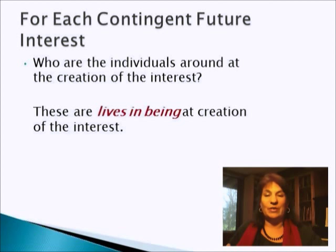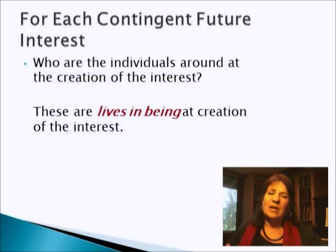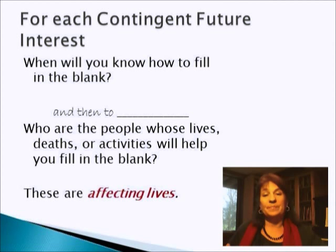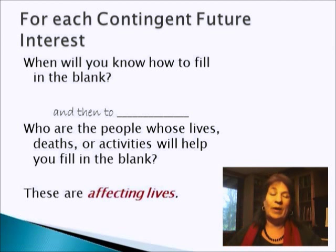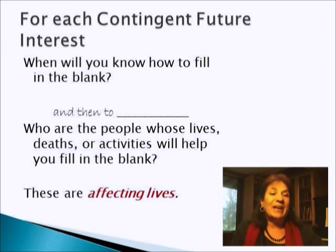So for each contingent future interest, here's how we go about it. Who are the individuals around at the creation of the interest? Those people we're going to call lives in being. The people who are around at the creation of the interest. Second question: when will we know how to fill in the blank and write a check to somebody? We might look around and ask: who are the people whose lives, deaths, or activities will help us fill in that blank? We're going to call them affecting lives. Sometimes we won't be looking for affecting lives — we'll be looking for affecting events. But the tricky ones are the ones where we have to look for affecting lives.